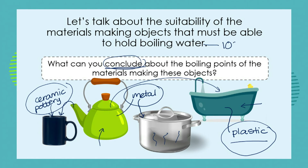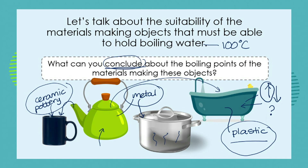We know that water has a boiling point of 100 degrees Celsius. Would plastic have a higher or lower boiling point? Well, if it's going to be able to hold boiling water, it must have a higher boiling point than water — in exactly the same way the metal that makes up kettles and pots has to have a much higher boiling point, because you don't want to boil water and have the kettle start to boil as well. You don't want to pour boiling water into your mug and have the mug start to boil. So whilst water boils at a specific temperature, other materials that hold boiling water need to have a much higher boiling point than the water itself.